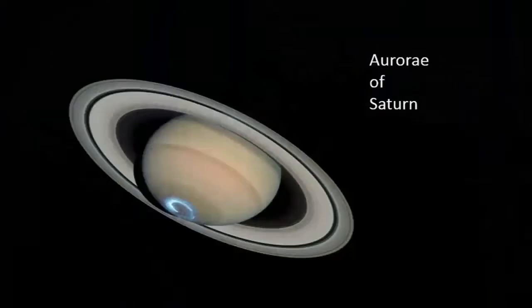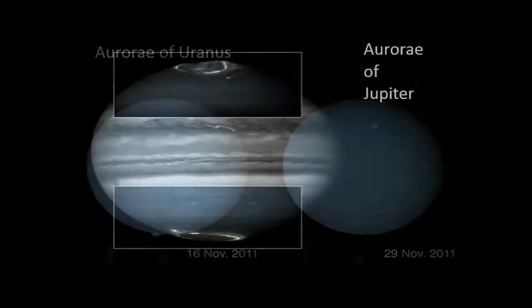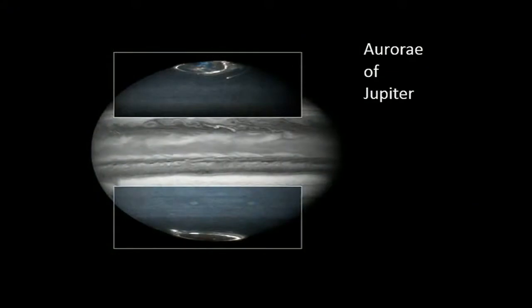Hubble is enabling us to see, for example, aurorae on other planets in our solar system that shine their light mostly in ultraviolet. These change with time as we monitor them.